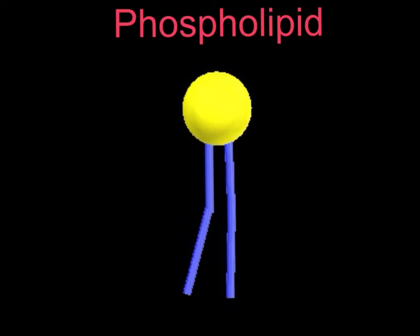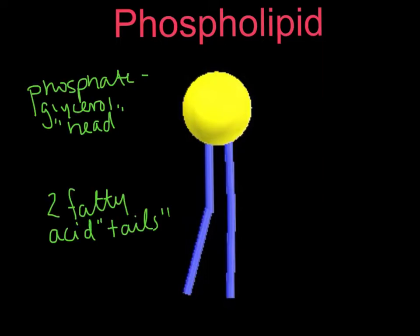In order to understand the structure of the plasma membrane, which is found in every single cell, you need to understand the structure of this molecule right here, which is a phospholipid. A phospholipid is made up of two parts: we have the phosphate and glycerol head right here, and then we have these two fatty acid tails — hence the lipid part. So 'phospho' for the phosphate glycerol head, 'lipid' for the fatty acid tails.